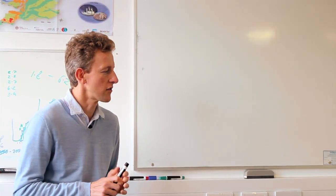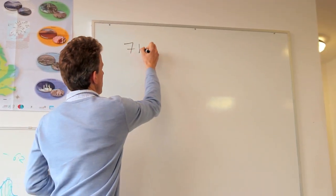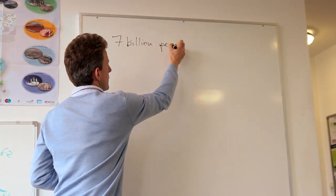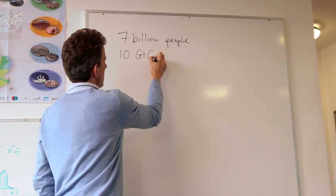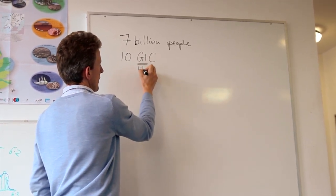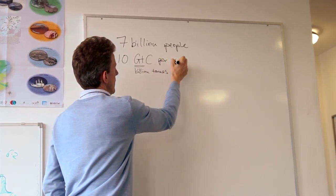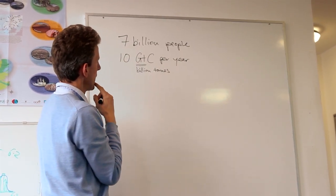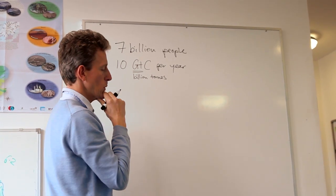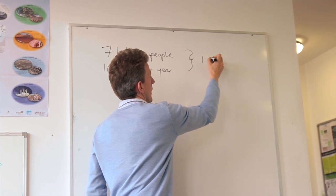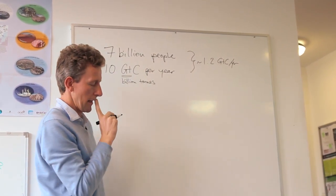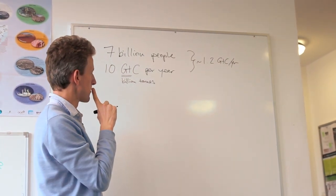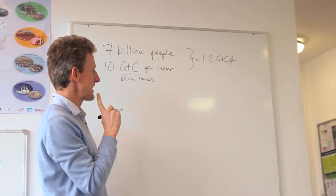Great question. There are seven billion of us on the planet at the moment, and there's maybe about 10 billion tons per year of carbon emissions - we call that a gigaton. So the average person on the planet is emitting a bit over one gigaton - about 1.2 to 1.3. If people have been doing the calculations here in Britain, many might get a number more like 7 or 8.